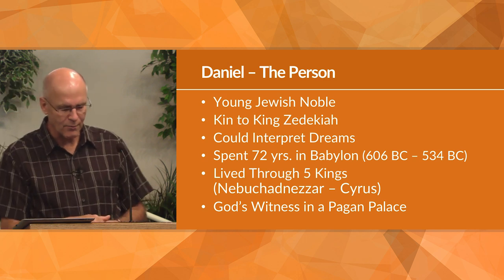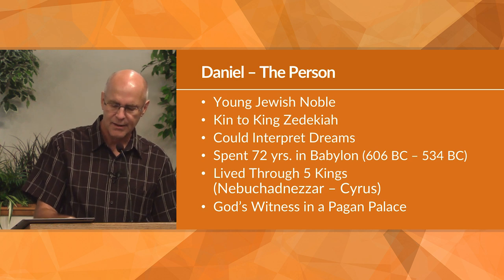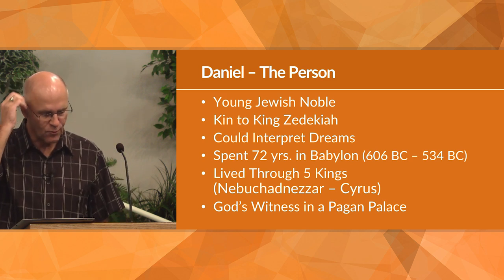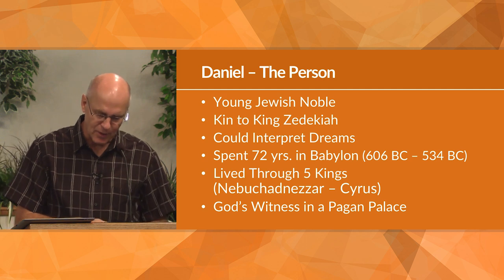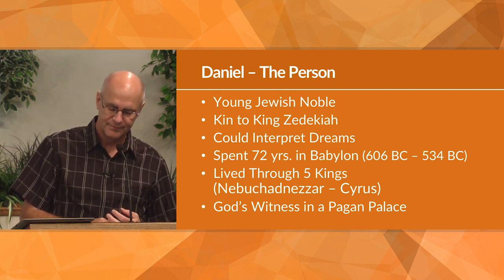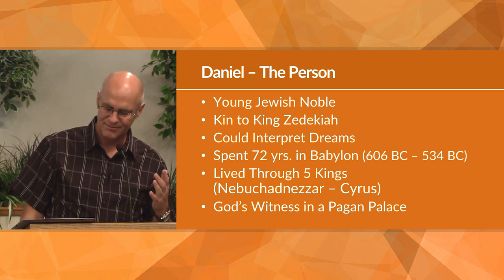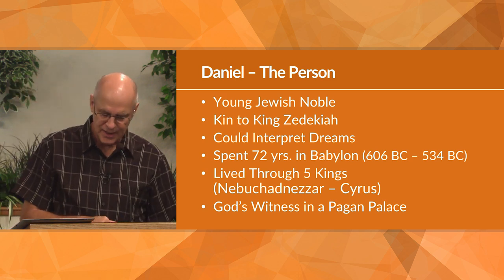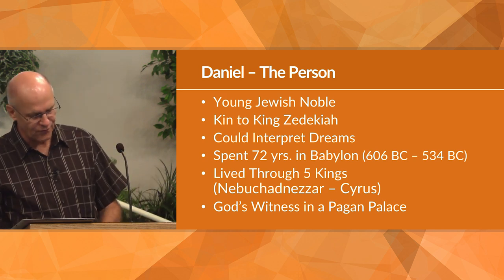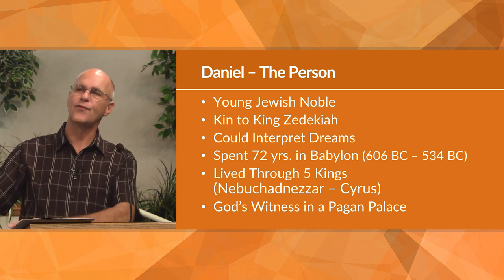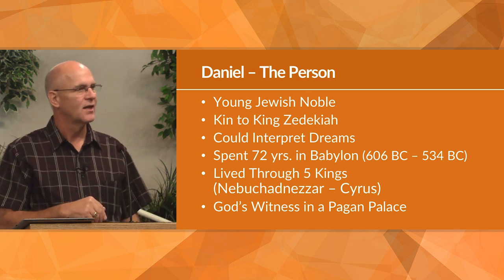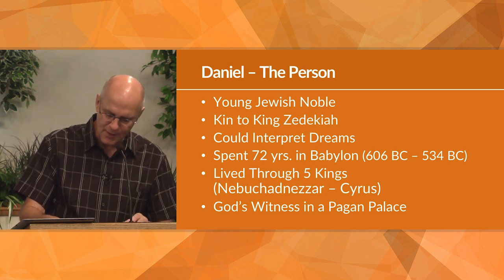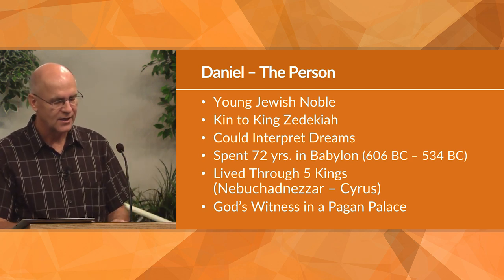Daniel rose to a position of great power because of his ability to interpret dreams, his visions, and his great piety and faith in the Lord. He was a young man when he went into captivity and died an old man still in Babylon 72 years later. He lasted through the reigns of five kings, beginning with Nebuchadnezzar and lasting to Darius the Persian and Cyrus the Mede in 534 B.C. Even when the Jews returned from captivity after 70 years, Daniel stayed in Babylon until his death.